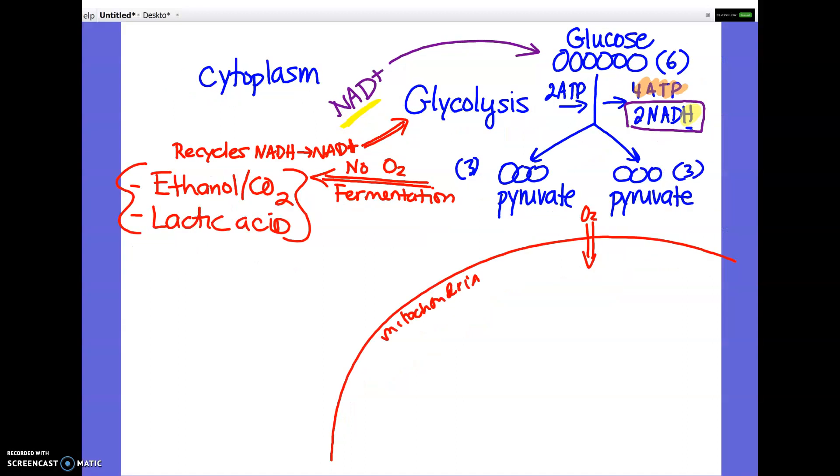Alright, so picking up from where we left off yesterday, here's a quick refresher of the first part of cell respiration. We start with glucose, which is a six-carbon molecule, and in the cytoplasm our first step happens, which is glycolysis. Glycolysis is actually a multi-step process that requires several enzymes, but ultimately all glycolysis really does is it takes our six-carbon glucose and it splits it into two three-carbon molecules called pyruvate.